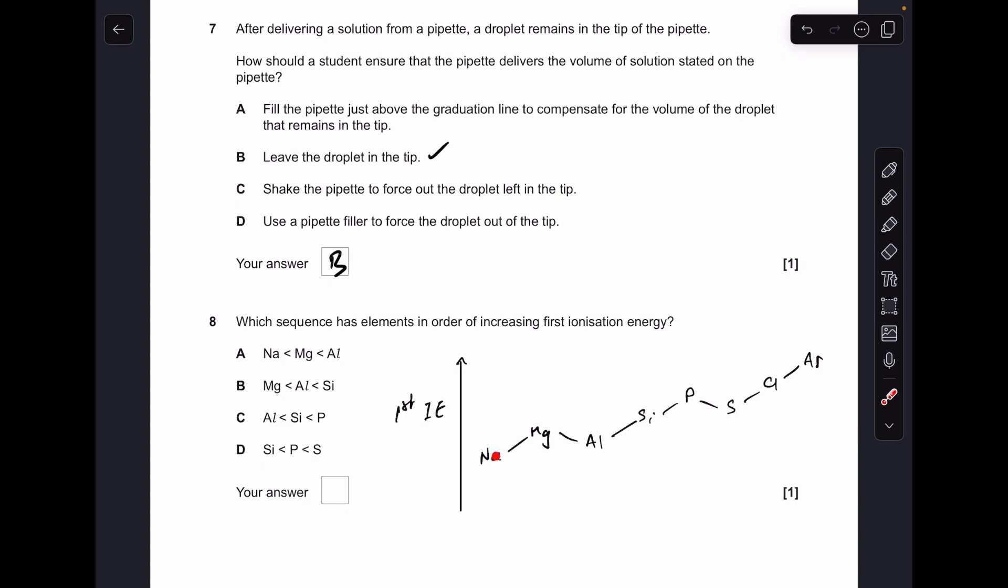So if we just look at the sequences till we get the right one: sodium, yep, definitely the lowest, but magnesium is not next lowest because obviously it's higher than aluminium, so A is wrong. Moving on to sequence B, starting with magnesium, so magnesium is not the lowest, aluminium is the lowest, so B is wrong. Sequence C: starting with aluminium, then silicon, then phosphorus. Yep, that's the right one, so C was the answer.